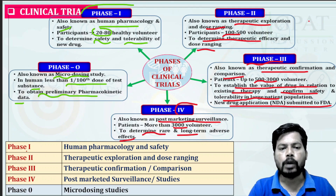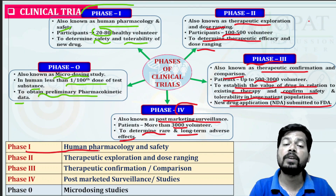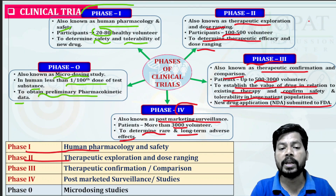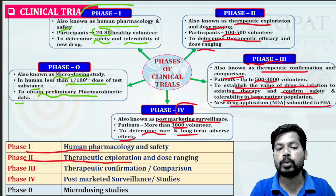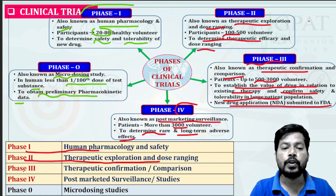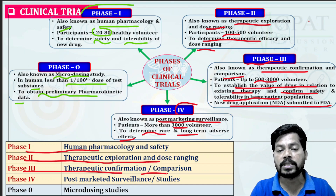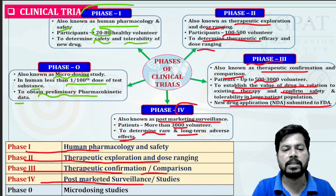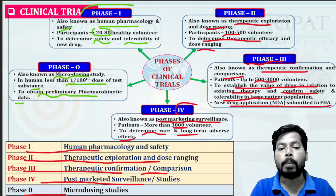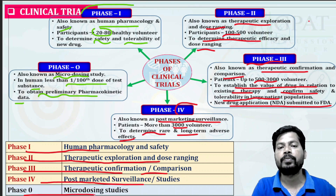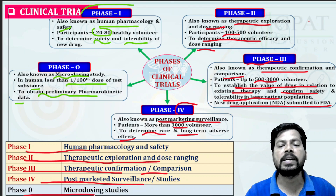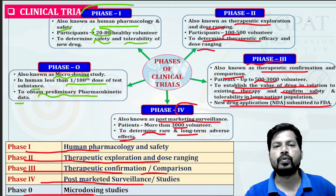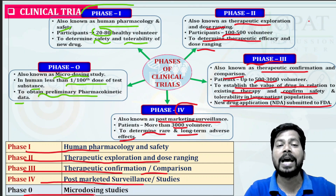In conclusion: Phase One is mainly for identification of human pharmacology and safety; Phase Two is mainly for therapeutic exploration and dose ranging; Phase Three is mainly for therapeutic confirmation and comparison; Phase Four is post-marketing surveillance studies; and Phase Zero is the micro dosing study. This is a glimpse of clinical trials in an easy way.